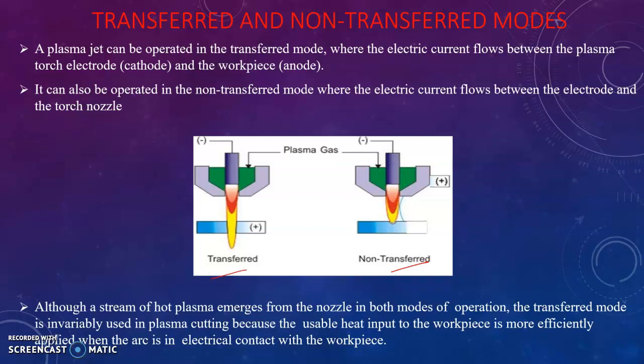In transferred mode, the electric current flows between the electrode and the workpiece, and in non-transferred mode, that is between the electrode and the nozzle. The transferred mode is a more efficient and mostly used process, and is useful for welding, cutting, and hard surfacing of metals.